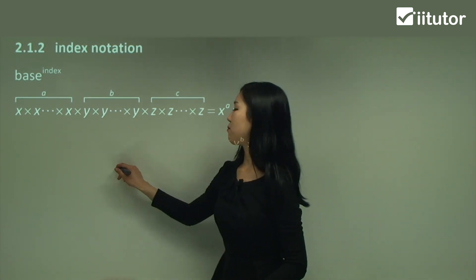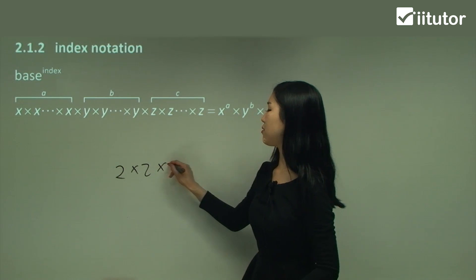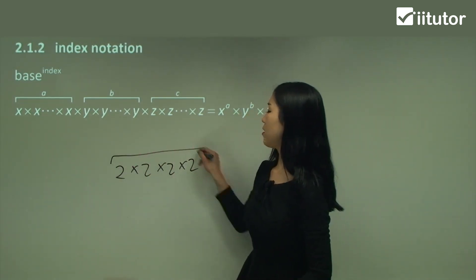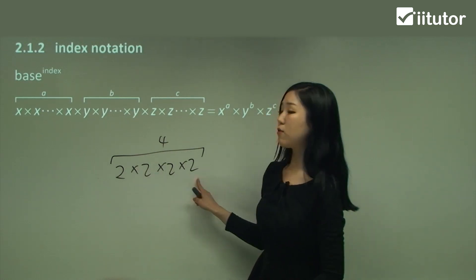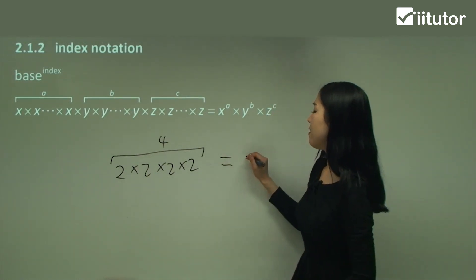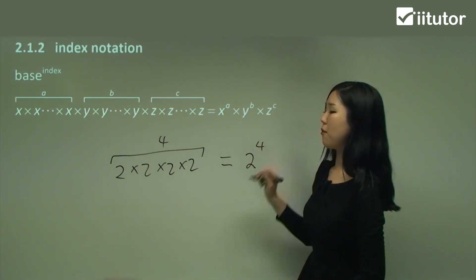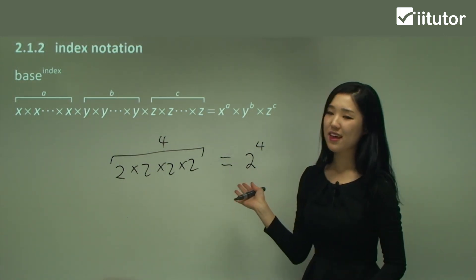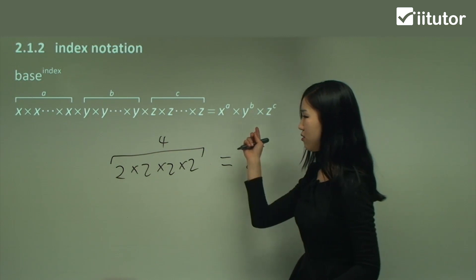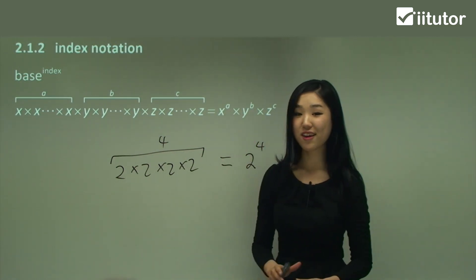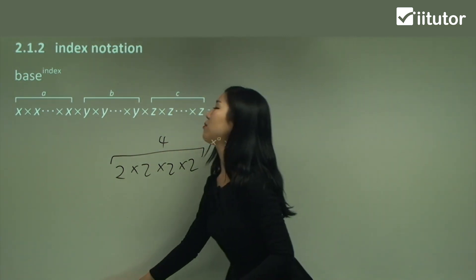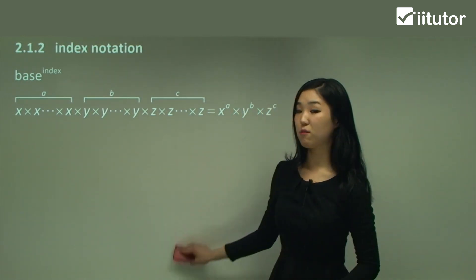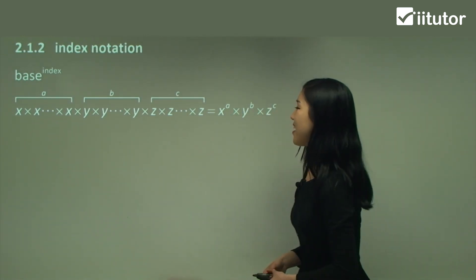So if I had 2 times 2 times 2 times 2 — how many 2's are there? There's four of them: one, two, three, four 2's. So I'd write this as 2 to the power of 4. This is what we've been used to in the previous section. So don't get confused if I'm using different pronumerals — that's all it means. Hopefully you can try some of them by yourself.